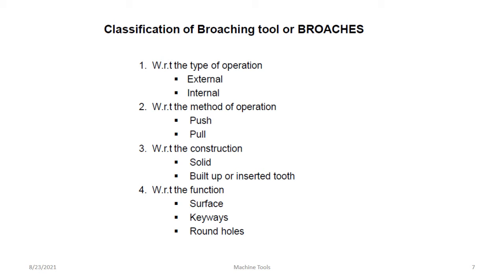With respect to the application of broaching: internal broaching machine and external broaching machine. Internal broaching machines produce a board of different profiles, while external broaching machines perform surface broaching. This is the classification of the broaching machine.